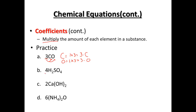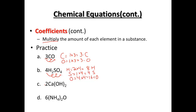For 4H₂SO₄, or four sulfuric acids, that four multiplier is applied to everybody in the substance. For hydrogen, two times four gives us eight hydrogens. For sulfur, one times four gives us four sulfurs. For oxygen, four times four gives us 16 oxygens. That's the relative amount — how many of each atom we'd have with that coefficient multiplier in front.